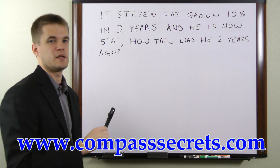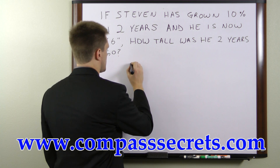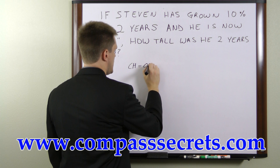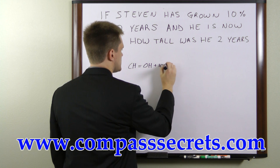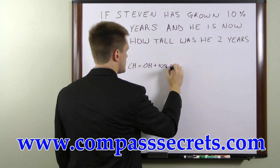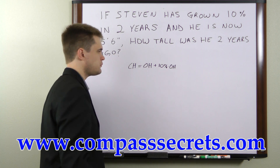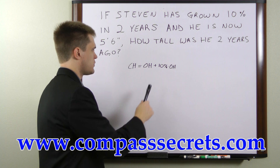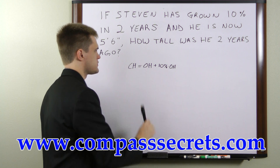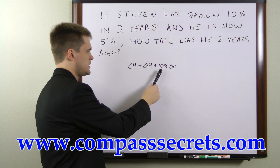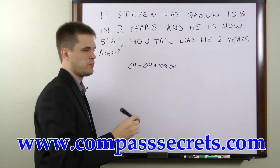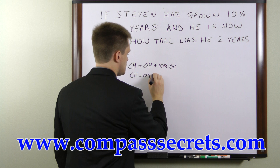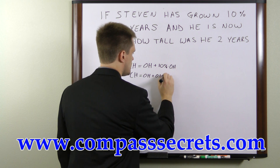That means our equation has to look like this: the current height is equal to the original height plus 10% times the original height. We are looking for the original height, so to solve for it we have to combine these two terms. We need to convert this percentage to a decimal, so we can rewrite this as CH equals OH plus 0.1 OH.